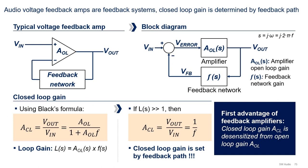Using Black's formula, we can derive the amplifier's closed loop gain, ACL, as shown here. Now, here is an interesting result. If the loop gain, in other words the product of AOL and f, is much much greater than 1, the closed loop gain becomes 1 over the gain of the feedback network, in other words 1 over f. Therefore, the amplifier's closed loop gain is set by the feedback network and is desensitized from the imprecise open loop gain. This is the first advantage of feedback amplifiers.